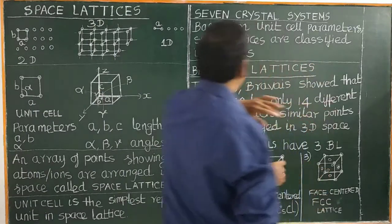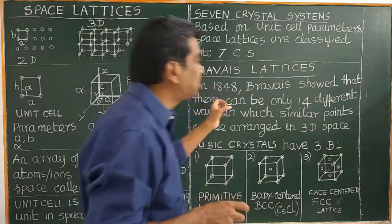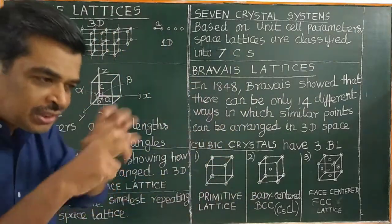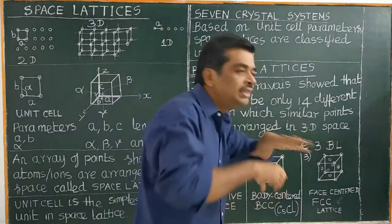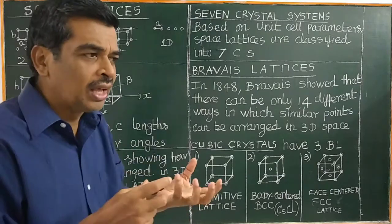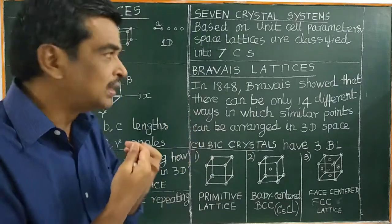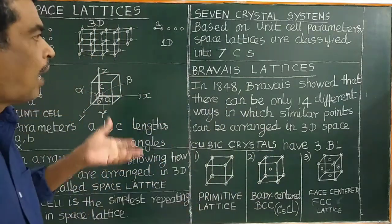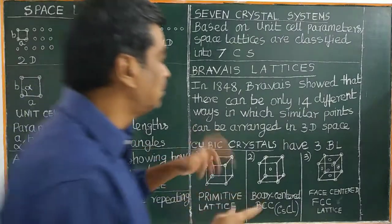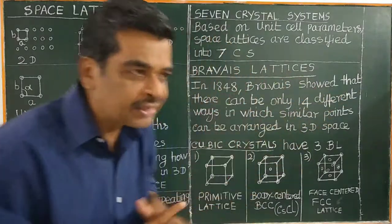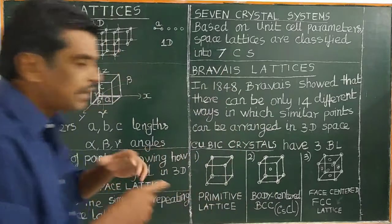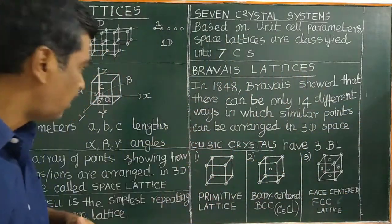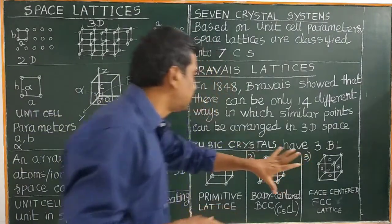The next concept is Bravais lattices. In 1848, French crystallographer Bravais showed that there can be only 14 different ways in which similar atoms or spheres can be arranged in three-dimensional space to form a three-dimensional network.